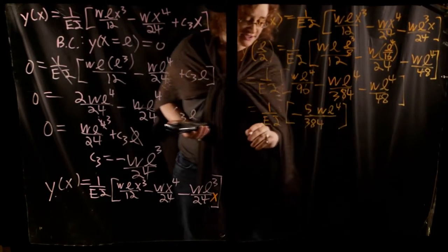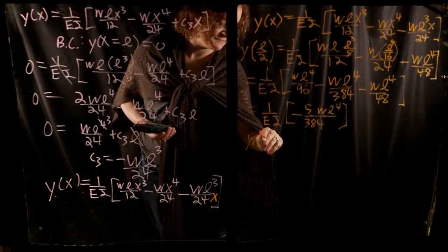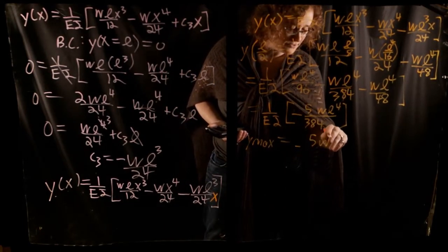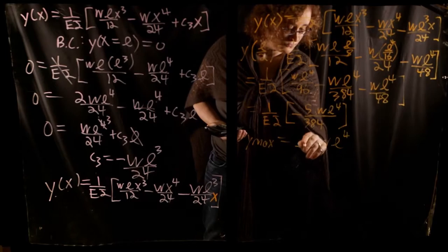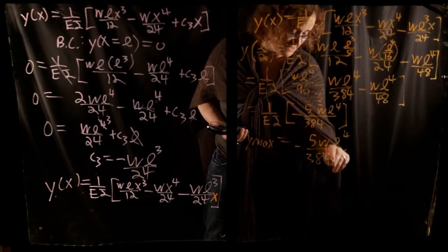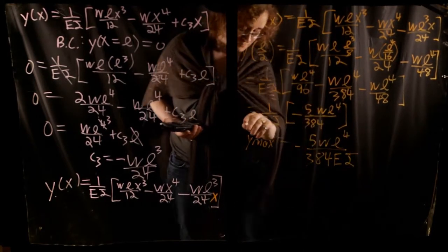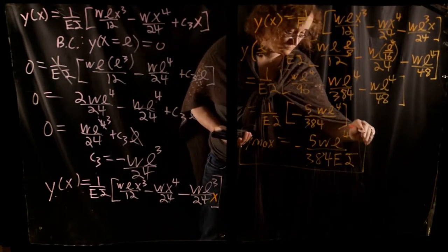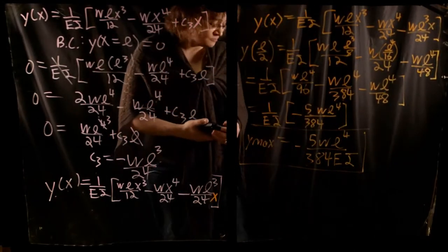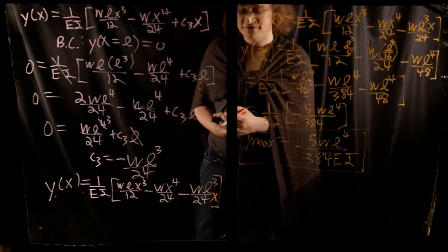Therefore, y_max at mid-span equals negative 5wL⁴ / (384EI). That is the standard solution you'll find in any beam table.